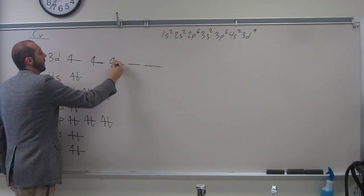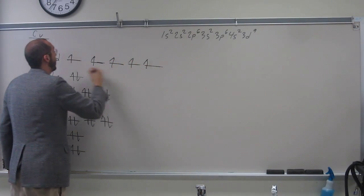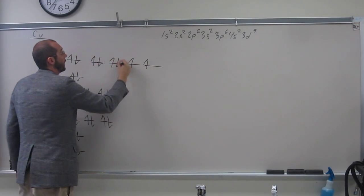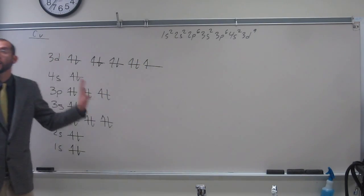1, 2, 3, 4, 5, 6, 7, 8, 9. Like that. So that would be copper's normal electron configuration.